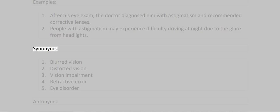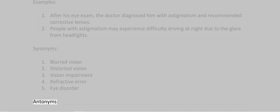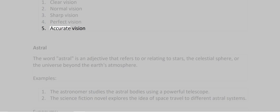Synonyms: 1. Blurred vision 2. Distorted vision 3. Vision impairment 4. Refractive error 5. Eye disorder. Antonyms: 1. Clear vision 2. Normal vision 3. Sharp vision 4. Perfect vision 5. Accurate vision.